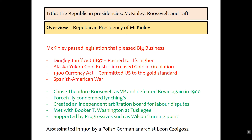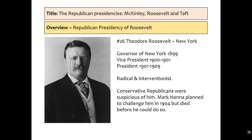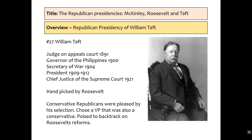McKinley was assassinated in 1901 by a Polish-German anarchist, Leon Czolgosz. He had won the election of 1900 by a landslide and might have pursued more progressive policies. Number 26 is Theodore Roosevelt, who as Vice President took over and had been former Governor of New York. He's radical and interventionist, known as the 'wild cowboy' or 'damned cowboy' by his party. The conservative wing of Republicanism was very suspicious of him. Mark Hanna, the big supporter of McKinley, decided to challenge him in 1904 but unfortunately died before he could do so.